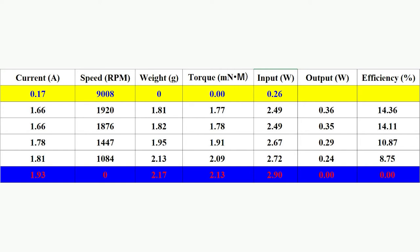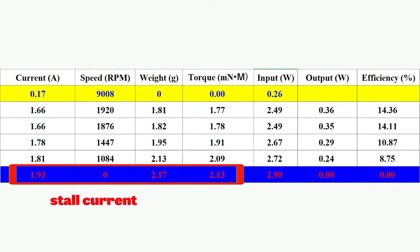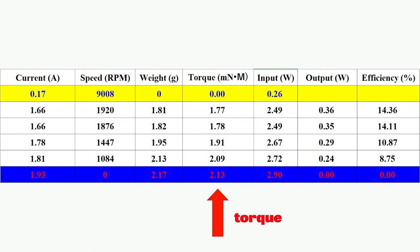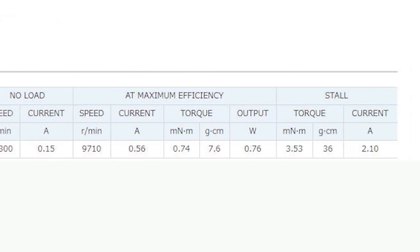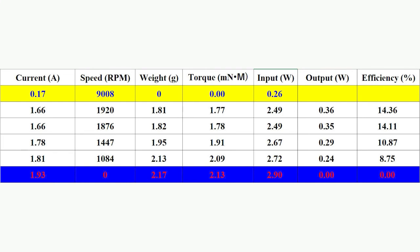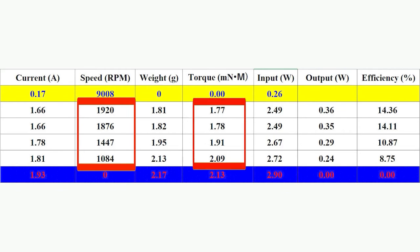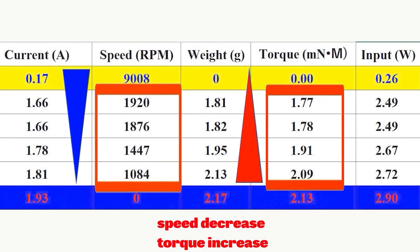When the applied voltage is 1.5 V, no load speed is 9008 RPM, the stall current is 1.93 A, and the torque is 2.13 mN. The data has fit the specification of the Mabuchi motor where my old motor is a little worse. When connecting to the friction torque meter which uses a ball bearing as a friction force, even the friction is small but the speed of the motor decreases very much. When increase the friction force by adjusting the metal plate, the speed decreases where the torque increases, just as we expected.